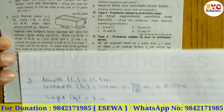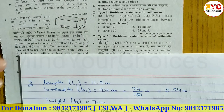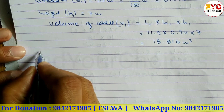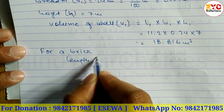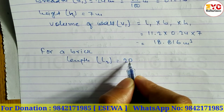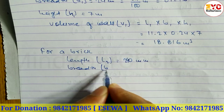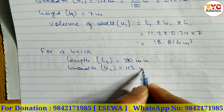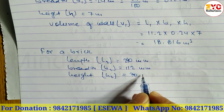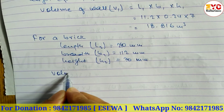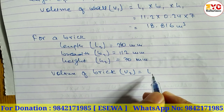Now we find the volume of a brick. The brick dimensions are: length L2 equals 240 mm, breadth B2 equals 112 mm, and height H2 equals 70 mm. The volume of brick V2 equals L2 × B2 × H2.